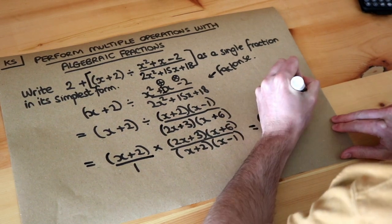So we just times the numerators together: x plus 2, 2x plus 3, x plus 6, and we have 1 times this, so x plus 2, and x minus 1. Now is anything common top and bottom? Yes there is, the x plus 2 is common.